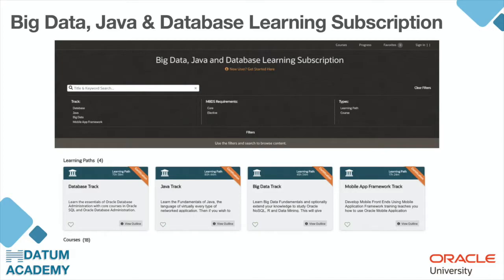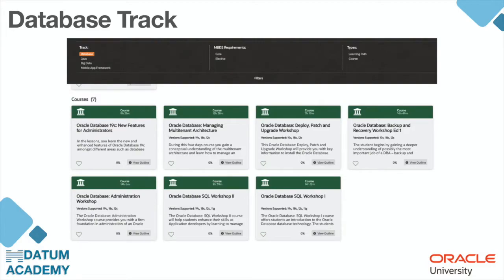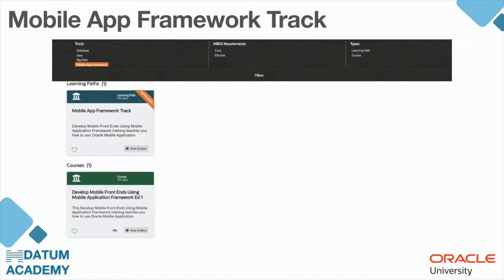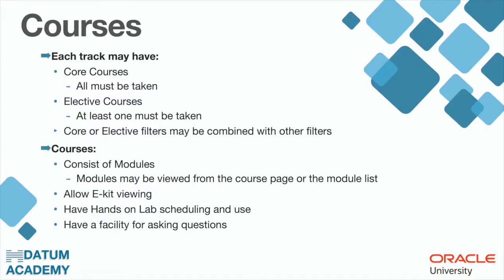This is how the platform looks like. Your learning subscription is called Big Data, Java and Database, and it's an exclusive learning subscription. Your learning subscription contains tracks — you have four tracks: Database Track, Java Track, Big Data Track, and Mobile App Framework Track. In each track you have core courses, all of which must be taken, and elective courses, of which you have to take at least one.